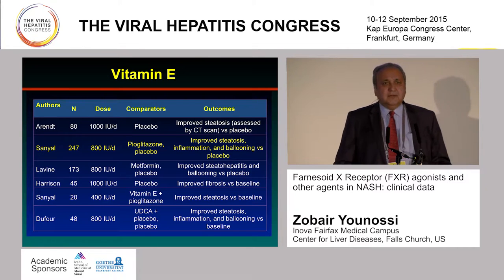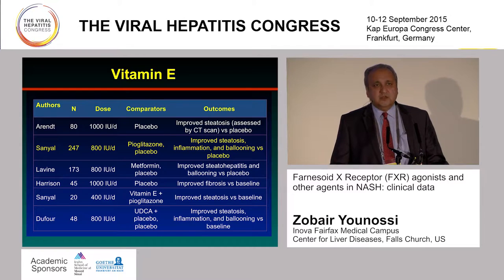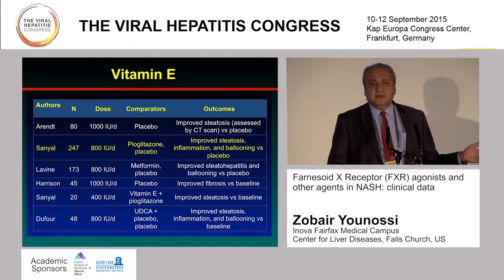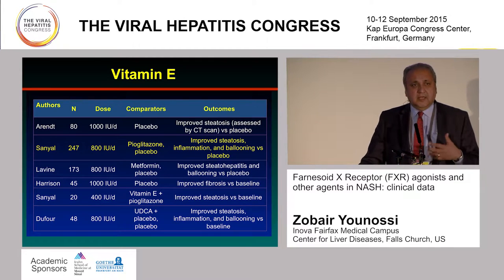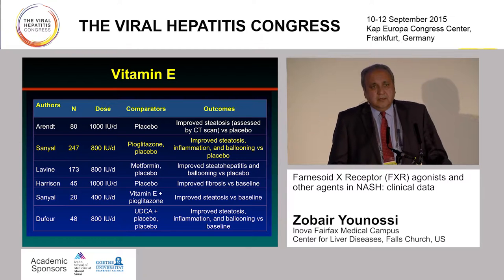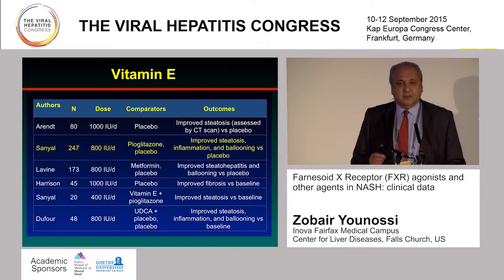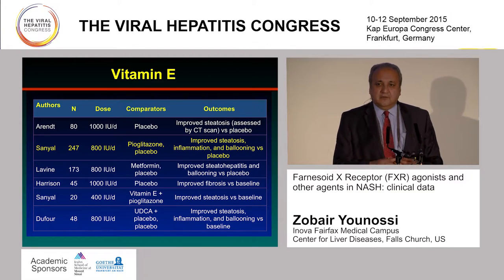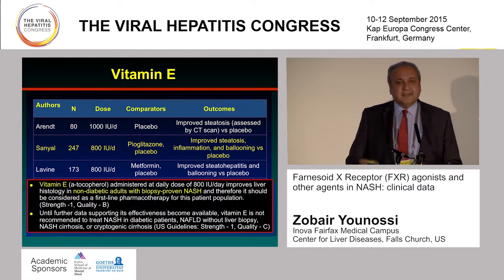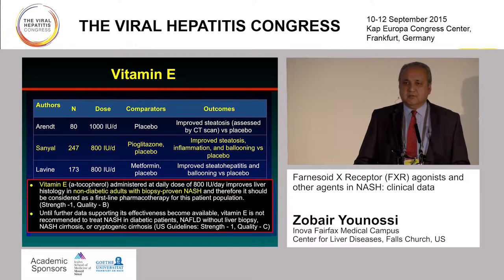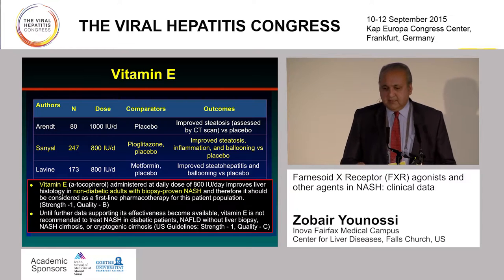Regarding vitamin E — oxidative stress is one of the pathways involved in the pathogenesis of non-alcoholic steatohepatitis. The strongest study is the PIVENS trial, which compared vitamin E 800 international units per day to placebo and to pioglitazone. The vitamin E arm was the only one that met the primary endpoint of the study. The AASLD guideline suggests that for non-diabetic patients with histologically proven NASH, they recommend the use of vitamin E. For diabetic or cirrhotic patients, it has not been recommended.